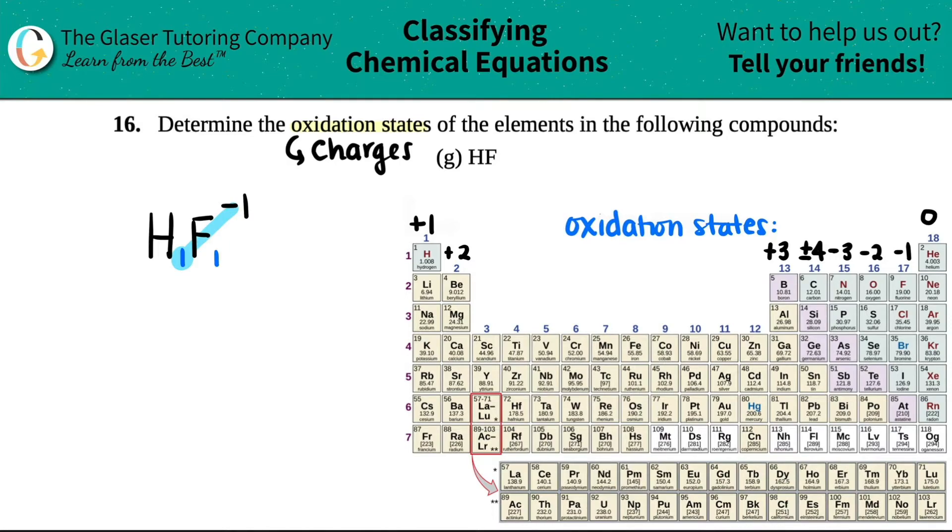We do the same thing for the hydrogen. This one told me that hydrogen was a plus one when we crisscrossed it down. So hydrogen was a plus one charge and fluorine was a minus one.